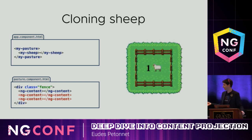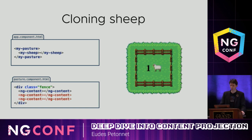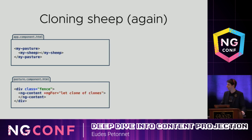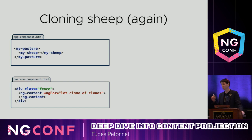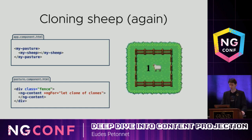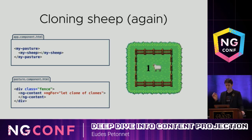The answer is you get one sheep, that's all. And what if you do it more cleverly — what if you have a single ng-content and put an ng-for on it? No, it doesn't work either. Cloning sheep is a very hard business, requiring years of research — just trying to trick Angular like that won't happen overnight.